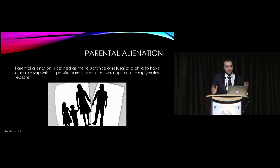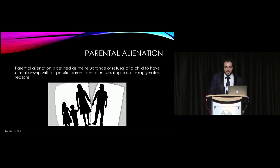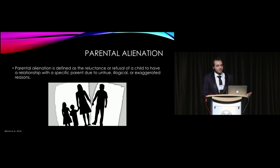Just in case anyone doesn't know, parental alienation — a good broad summary is that it's a reluctance or refusal of a child to have a relationship with a specific parent, known as the alienated parent, due to illogical, exaggerated reasons influenced onto them by the other parent, the alienating parent. The alienating parent influences the child to have a negative or no relationship with the alienated parent.